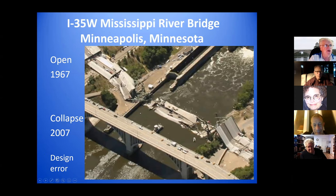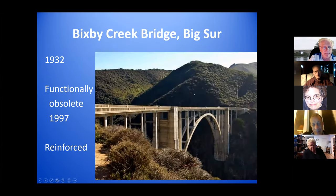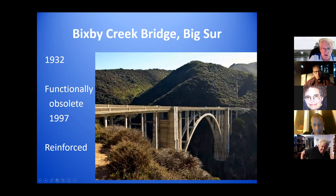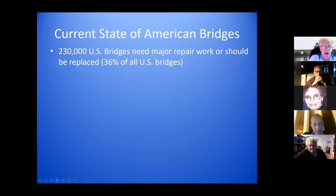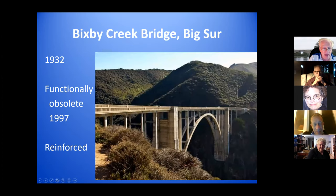The I-35W bridge in Minneapolis, Minnesota: over 40 years, wear and tear on the bridge took it down — it was essentially overloaded, a design issue. A bridge which, 65 years after it was built, was determined to be functionally obsolete: they closed it, reinforced the piers, and then reopened it. This is the Bixby Creek Bridge on the Pacific Coast, which was also reinforced after it was determined it could no longer function safely.